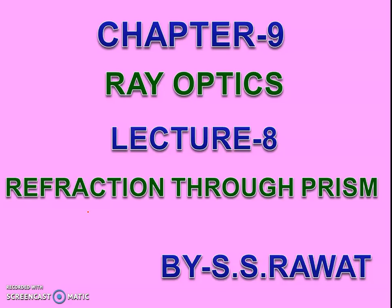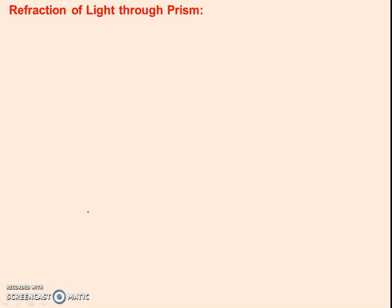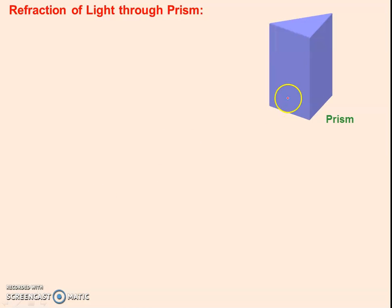We have already gone through this topic in class 10. First of all, what is a Prism? Actually, a Prism is a 3D structure with two refracting surfaces and a base. That bounded medium is called a Prism.